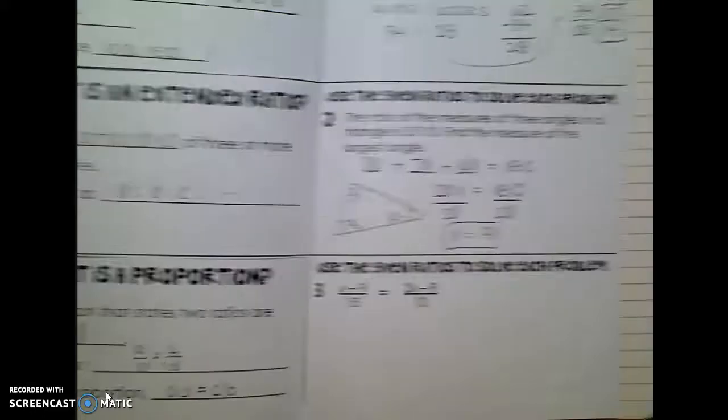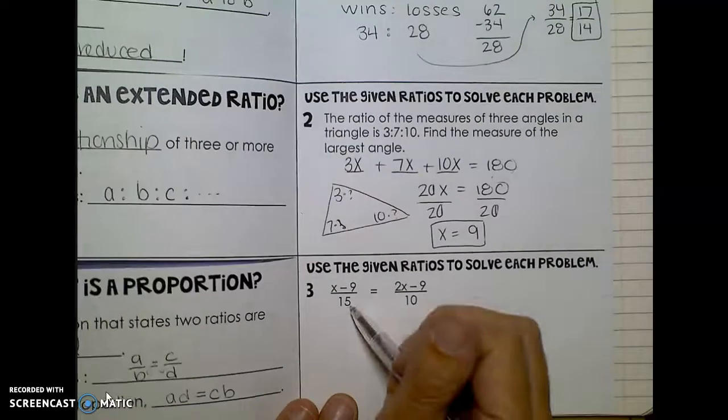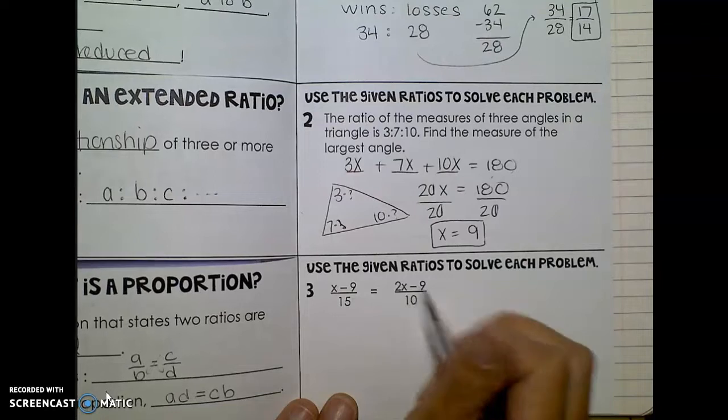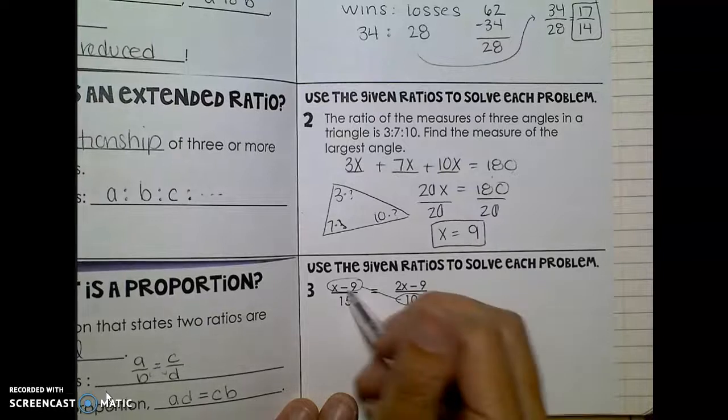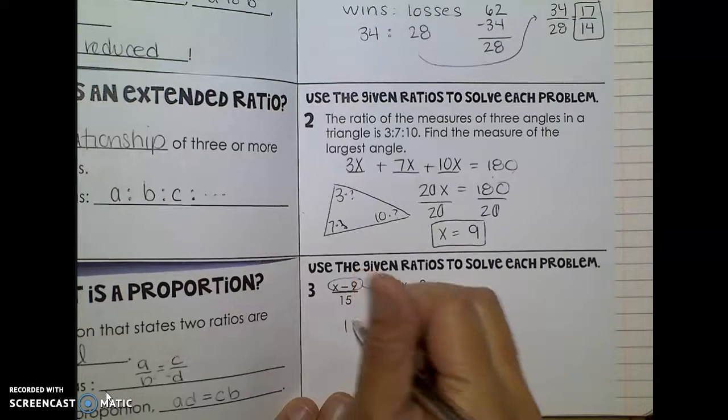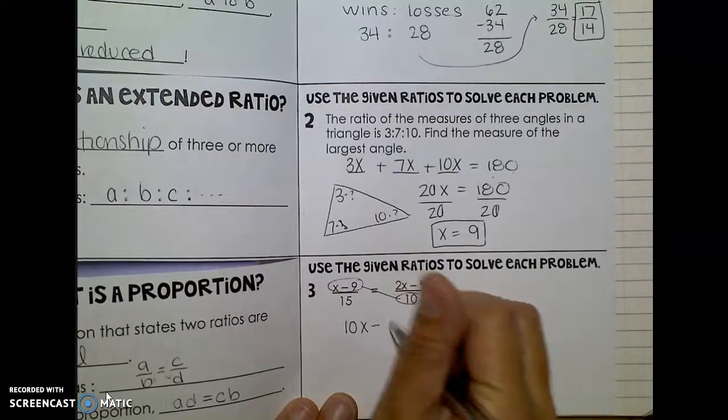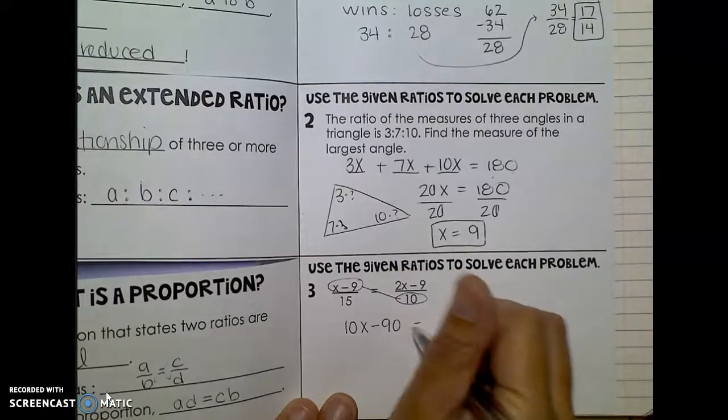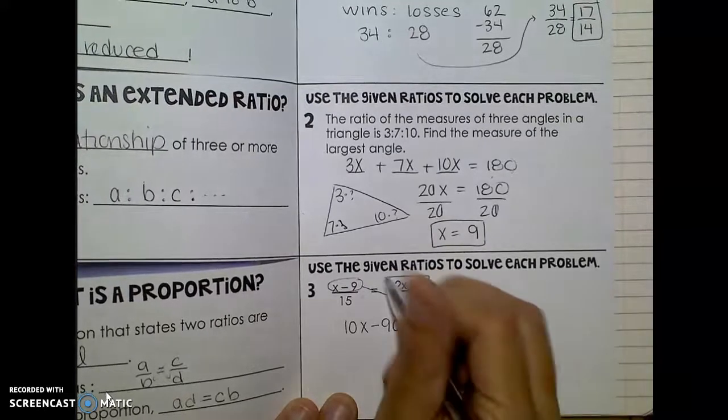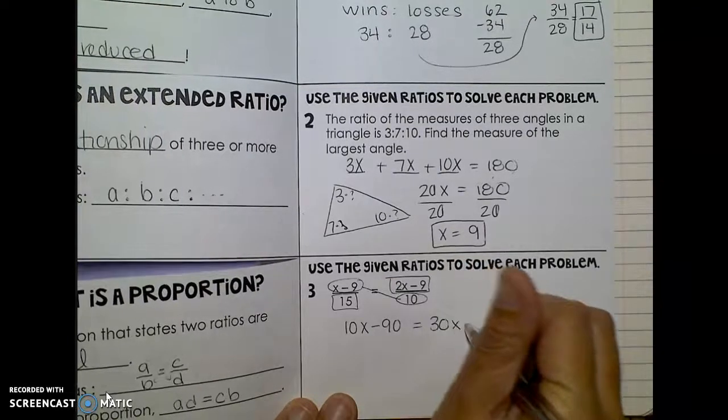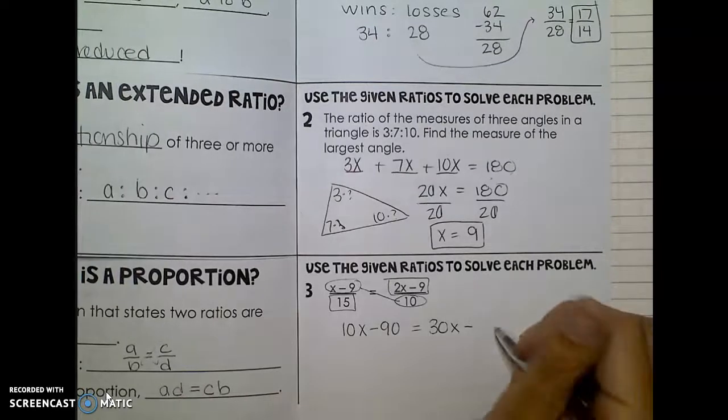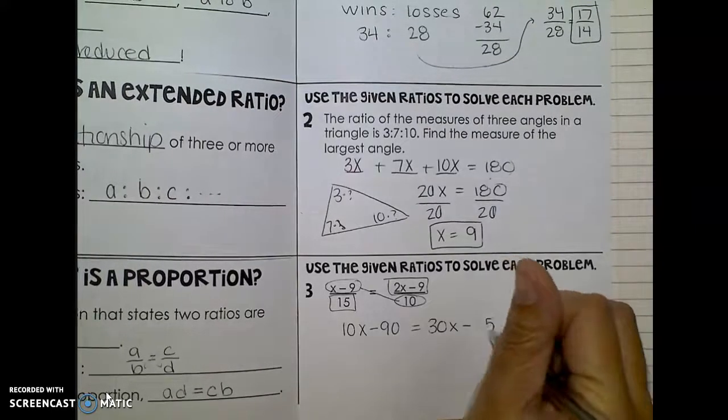So for instance, if I had something like this, a ratio over here is equal to that ratio over there, I can take this one and multiply it across. Now I really have two numbers that I'm multiplying, so I think it's going to look like 10x minus 90. And then this number over here times that number over there, so we'll have 30x minus 135.